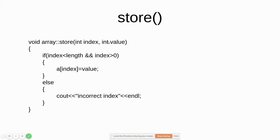For store, as stated, it will override the existing value. We again check whether the index is valid — if it is greater than the length or less than zero, we report an incorrect index. Otherwise we simply replace the value at the given index with the new value.